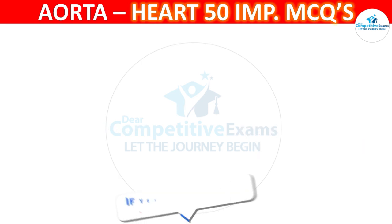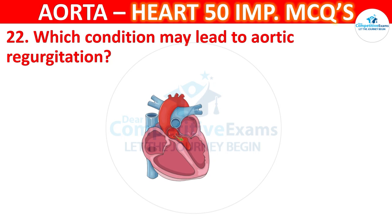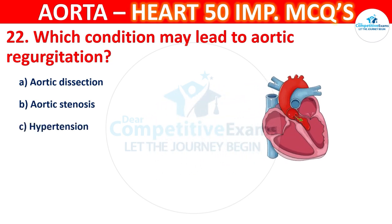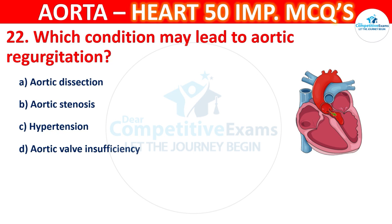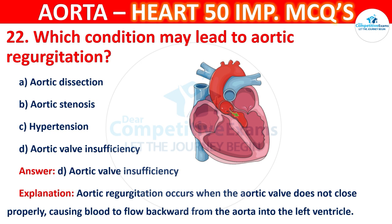Question number 22: Which condition may lead to aortic regurgitation? Options are aortic dissection, aortic stenosis, hypertension, or aortic valve insufficiency. Aortic regurgitation occurs when the aortic valve does not close properly, causing blood to flow backward from the aorta into the left ventricle.